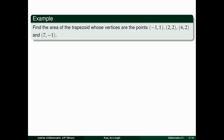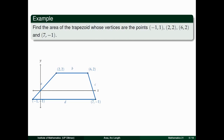Next example: Find the area of the trapezoid whose vertices are (-1, 1), (2, 2), (6, 2), and (7, -1). Similar to the previous problem but now a trapezoid with 4 points. We graph the 4 points, connect them, and label the line segments A, B, C, and E. We want to measure the area inside those line segments, so let's get the equations of the lines.